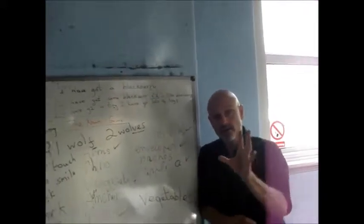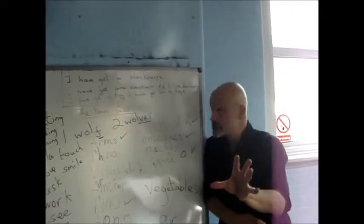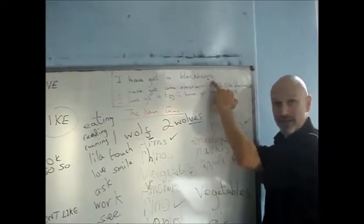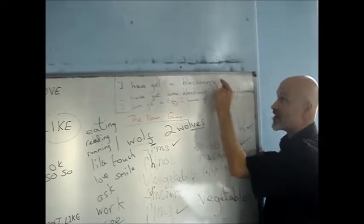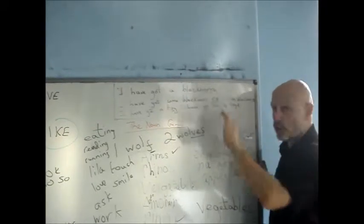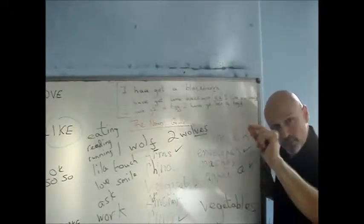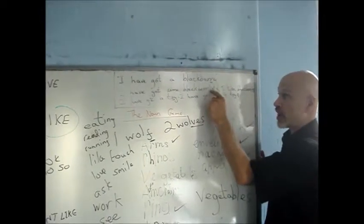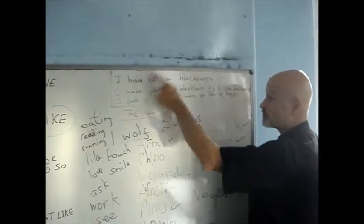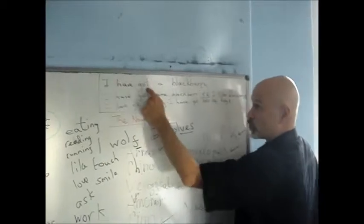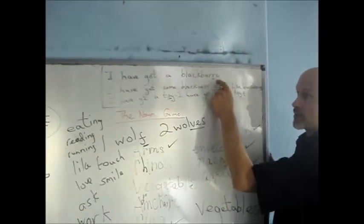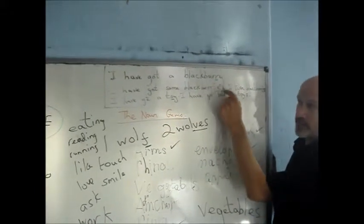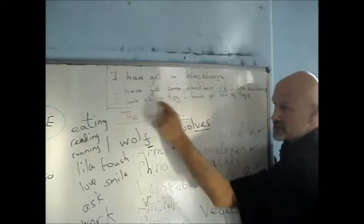I forgot just one quick rule for you guys. If the noun ends in a Y, and the letter before is not a vowel, when we make a plural, we take away the Y and we use I-E-S. So, example, I have got a blackberry. I have got some blackberries. Look at the change in spelling. And here, look at this example.